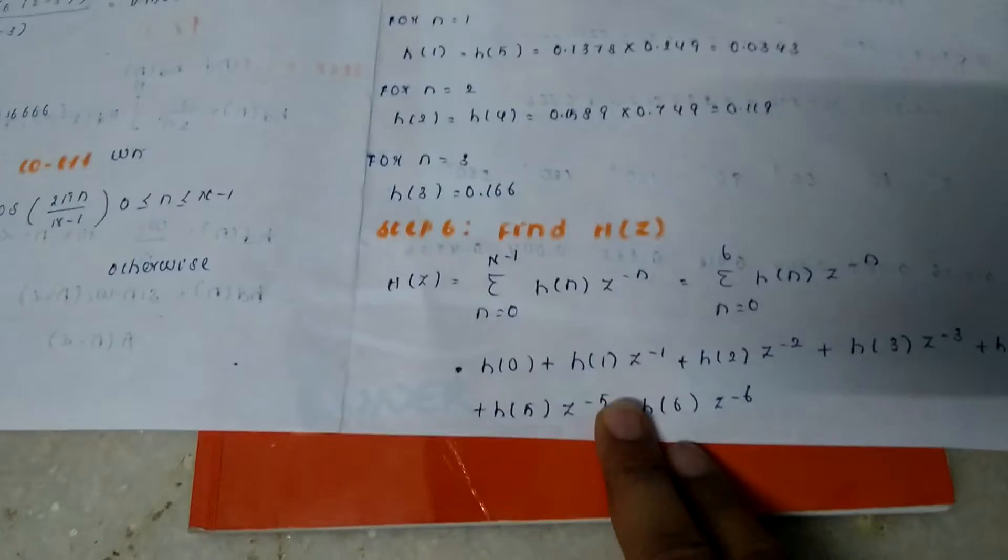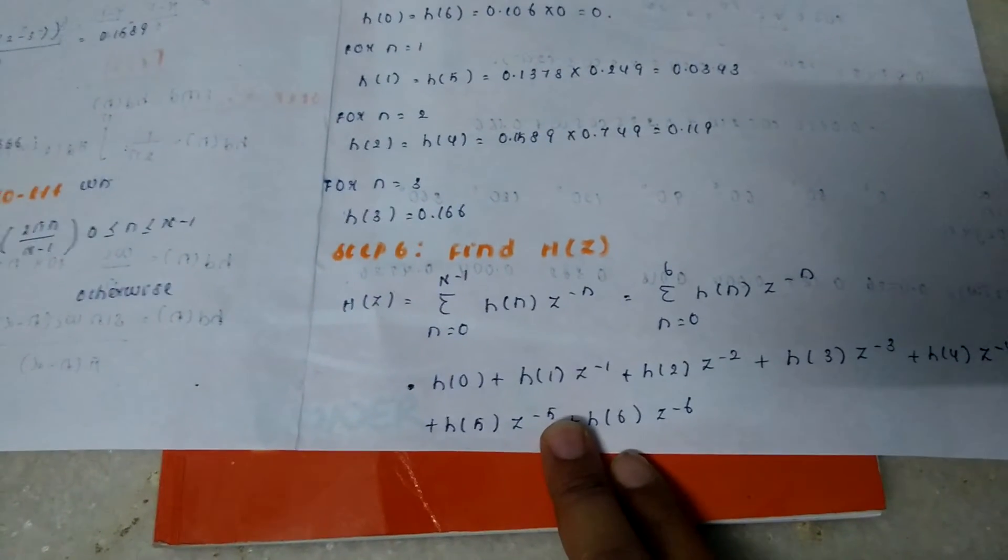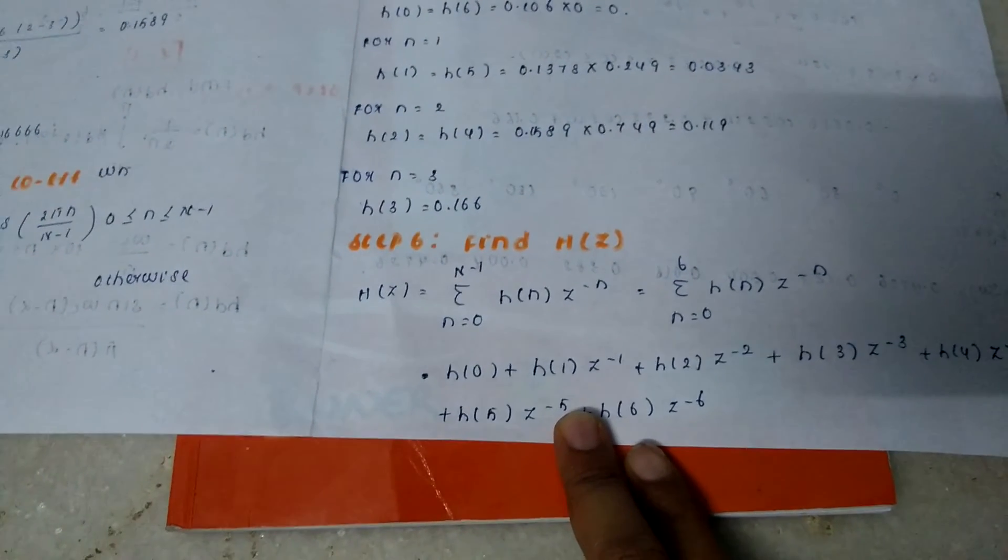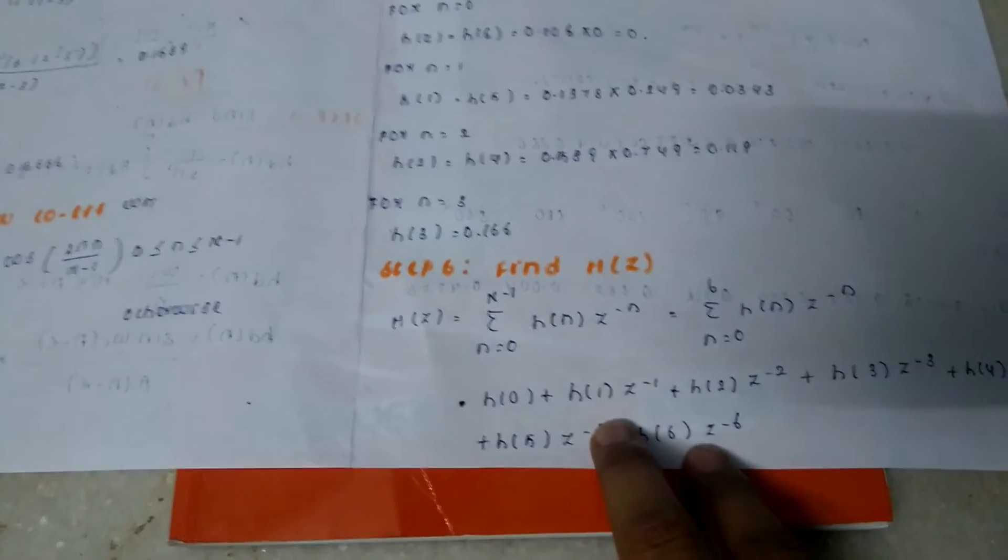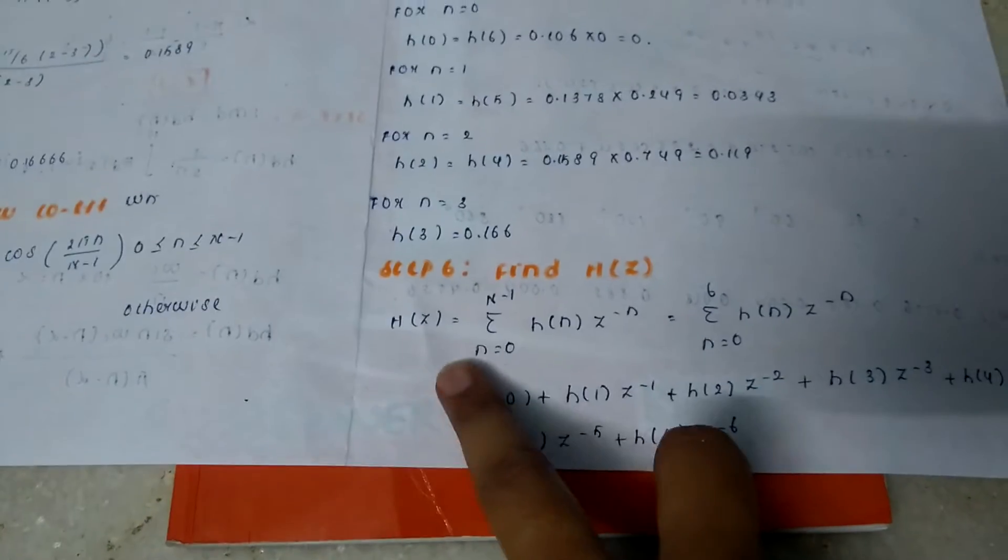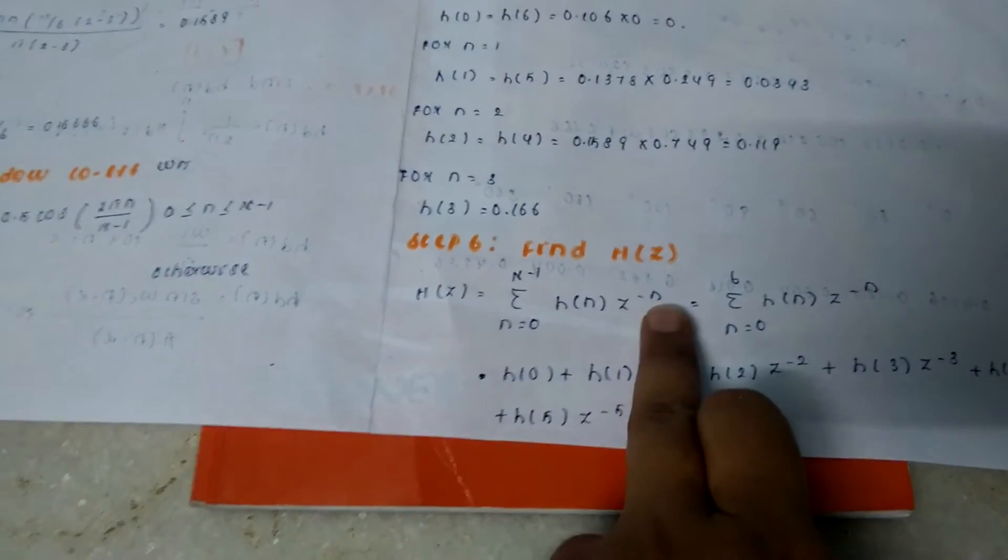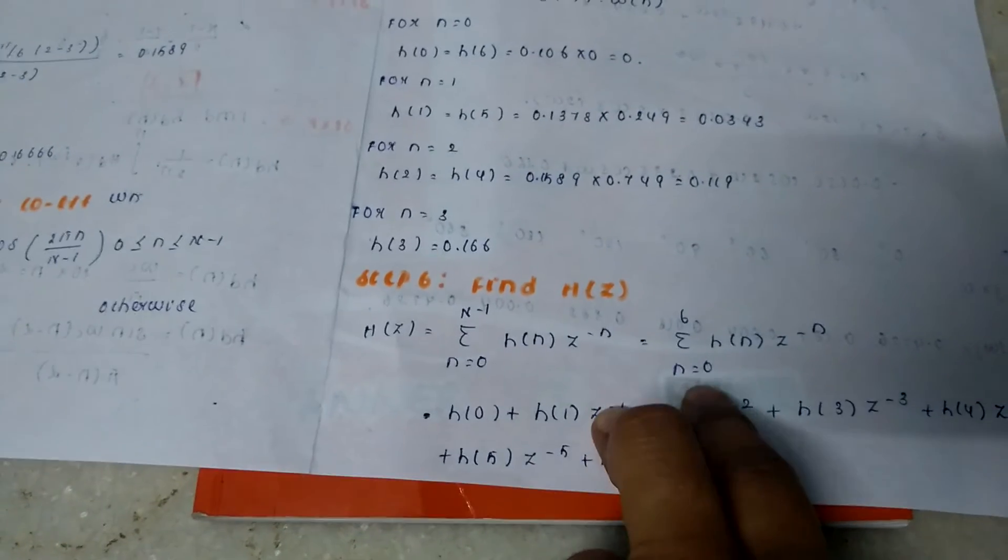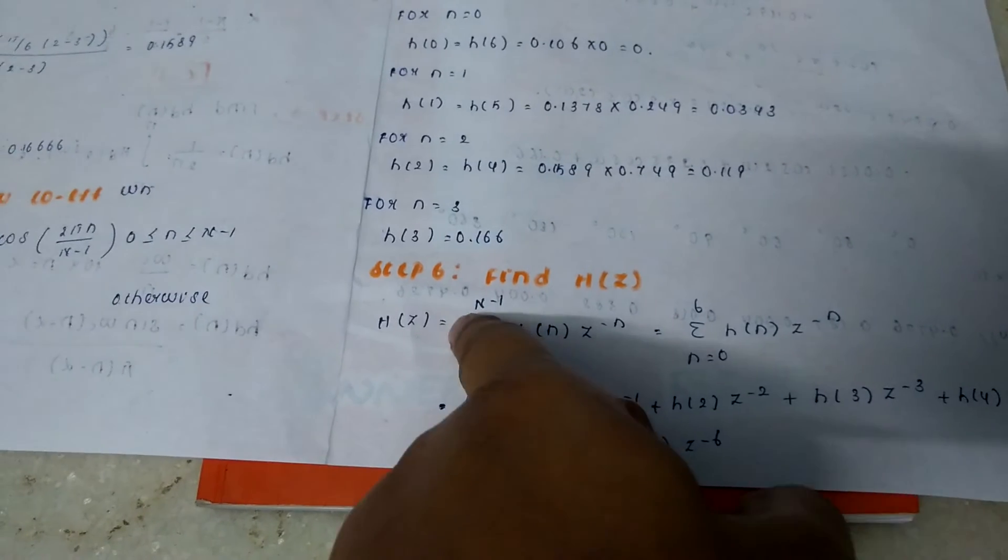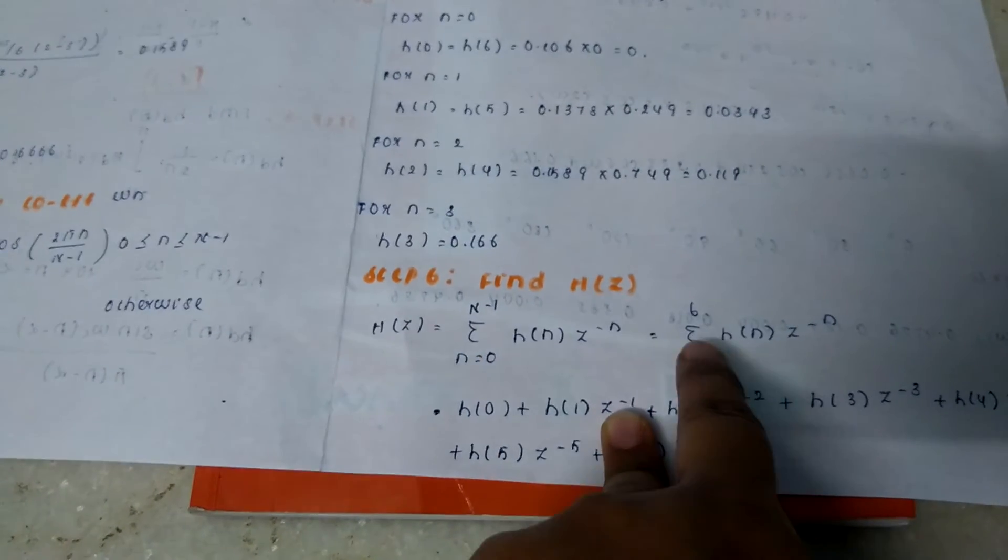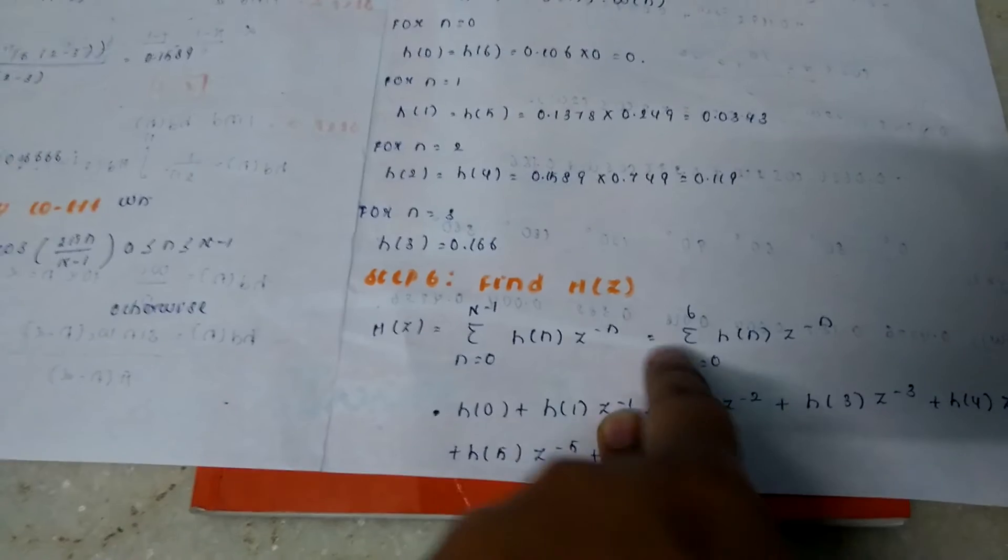At your sixth step, find your h(z), that is your digital filter response. The formula is h(z) = summation from n = 0 to 6 of h(n)z^(-n), where n value is 7, so 7-1 is 6.